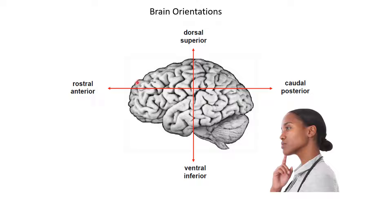The rostral or anterior side is where the prefrontal cortex is located, and the caudal or posterior side is the back side of the brain. That's where the visual processing area V1 is located, and the cerebellum is also located on the posterior side.